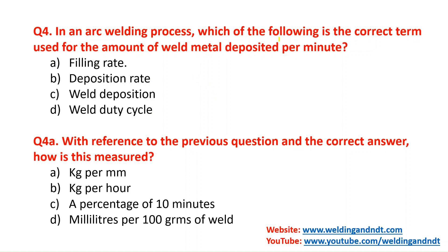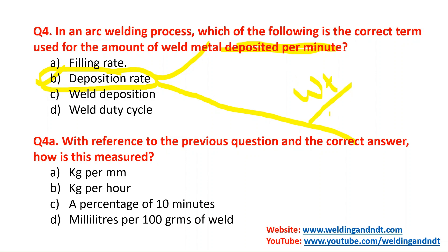Question number four: in an arc welding process, which is the correct term for the amount of weld metal deposited per minute? This is the deposition rate — deposited weld metal per minute. With reference to the previous question, how is deposition rate measured? Deposition rate is the weight of deposited weld metal divided by time. Among the options, option B — kg per hour — is correct, as kg is the unit of weight and hour is the unit of time.